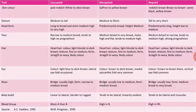Blood groups common in these three races: Caucasoid have more A than B; Mongoloid are higher in B; and across all three races, they have higher RH values.